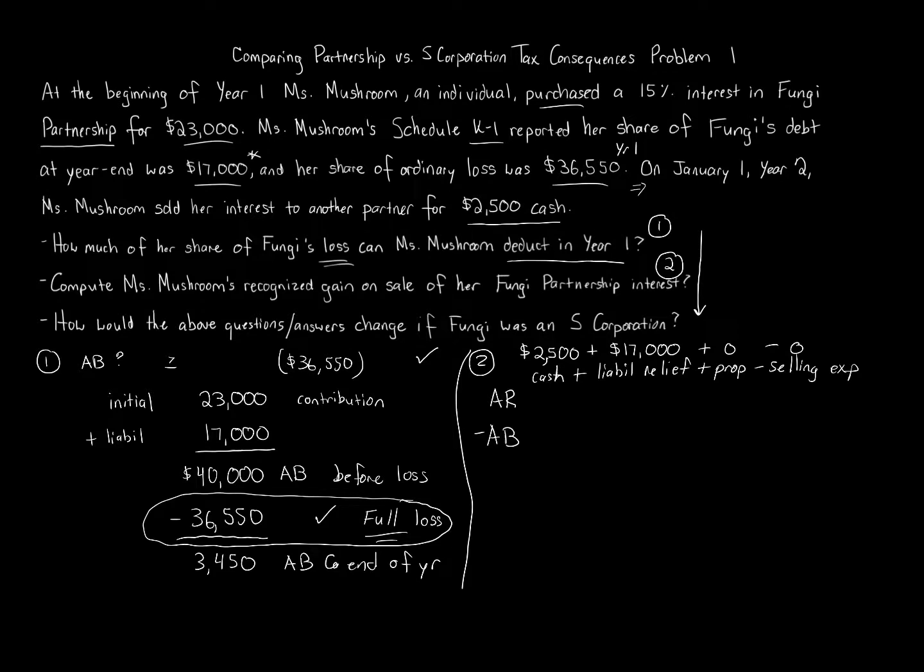We don't have that here. So $2,500 plus $17,000, that's going to equal $19,500 minus the adjusted basis of the partnership interest. Hey, we just calculated that. At the end of year one, we calculated it as $3,450. So we subtract those two numbers, $19,500 minus $3,450. The gain that Ms. Mushroom must recognize, just the number amount. I'm not talking about character or anything like that, just the number amount, which is what I care about here, is $16,050.